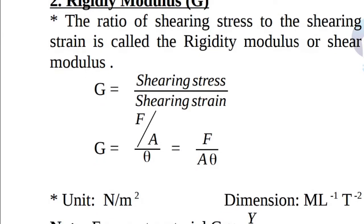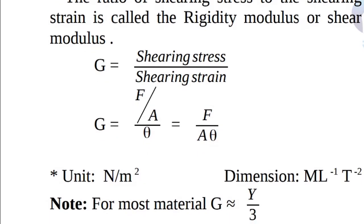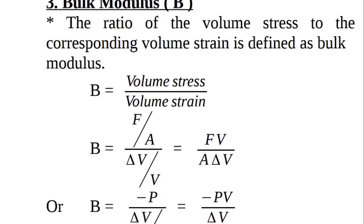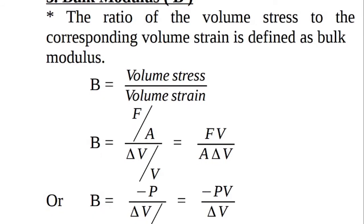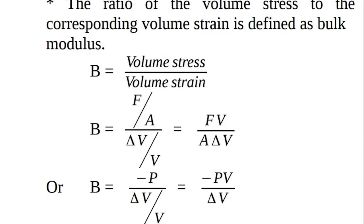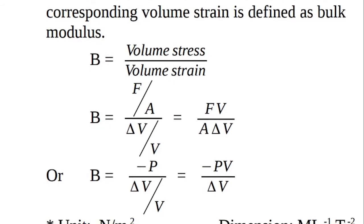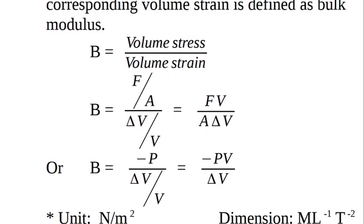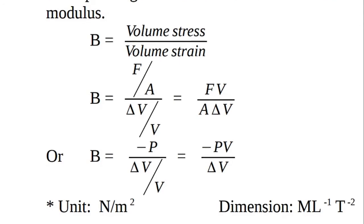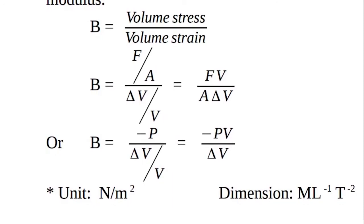Bulk modulus B is the ratio of volume stress to the corresponding volume strain. B = (F/A) / (ΔV/V) = FV / (A·ΔV). Since F/A can be written as minus P, it can be written as B = −PV / ΔV. Its unit is N per meter square and its dimension is M L⁻¹ T⁻².